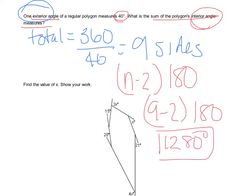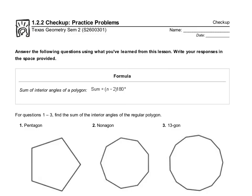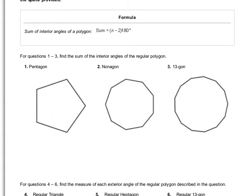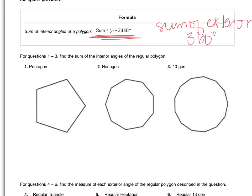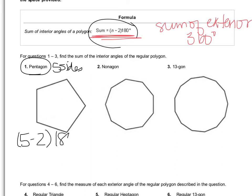Looking at your checkup, number 1 says to find the sum of the interior angles of the regular polygon. Do not forget the formula. I would also write down that the sum of the exterior angles is always 360, because that's important to remember. For a pentagon with 5 sides: 5 minus 2 times 180, plugged into the calculator, gives 540 degrees.